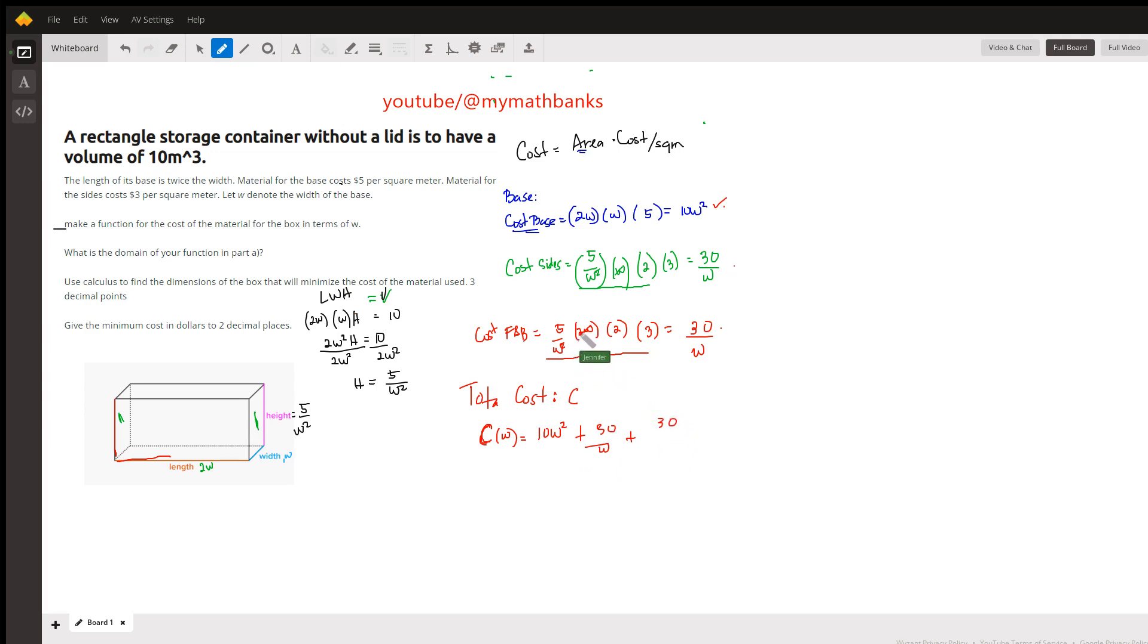Wait, this should be 60, and so therefore, your cost in terms of the width is 10w squared plus 90 over w. All right, so that is the function of your, this is the cost in terms of w.